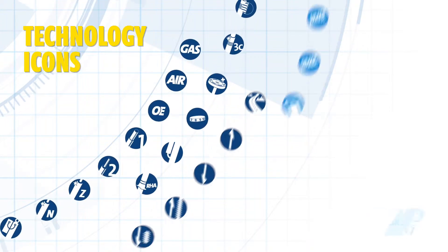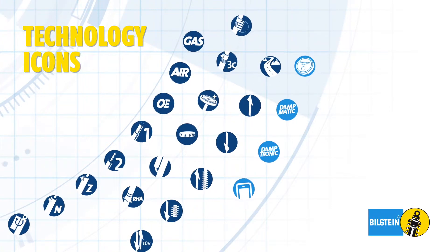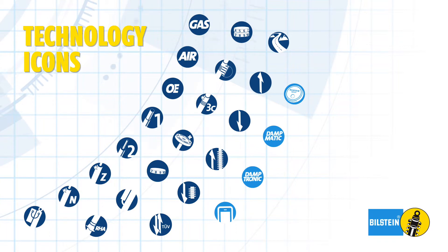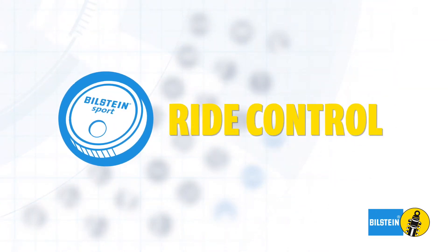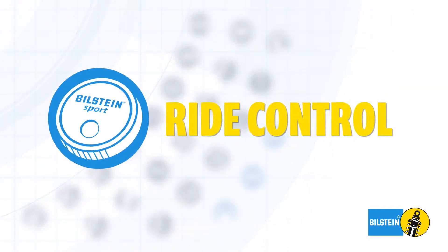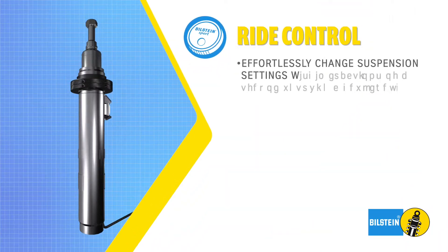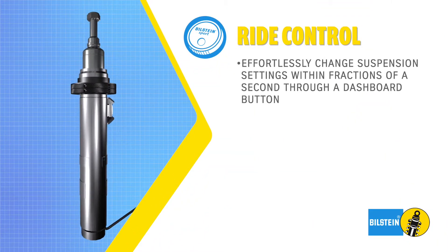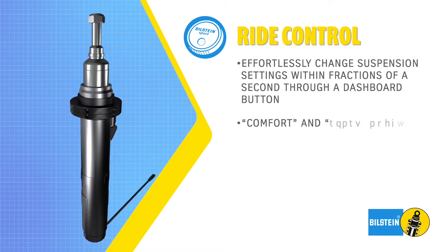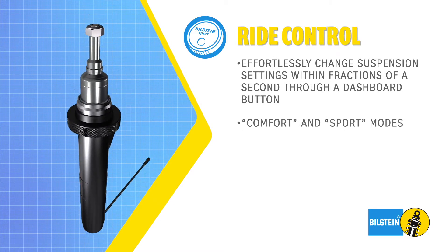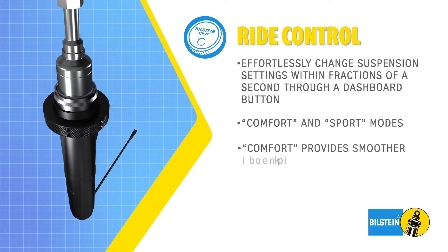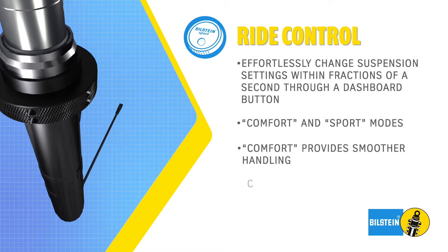Each Bilstein icon represents technologies featured in our line of shock absorbers. The Bilstein Ride Control icon represents the ability to electronically customize the suspension settings by pushing the ride control button on the dashboard. The integrated control unit switches the damping settings between comfort and sport in fractions of a second. Comfort mode provides smoother handling.